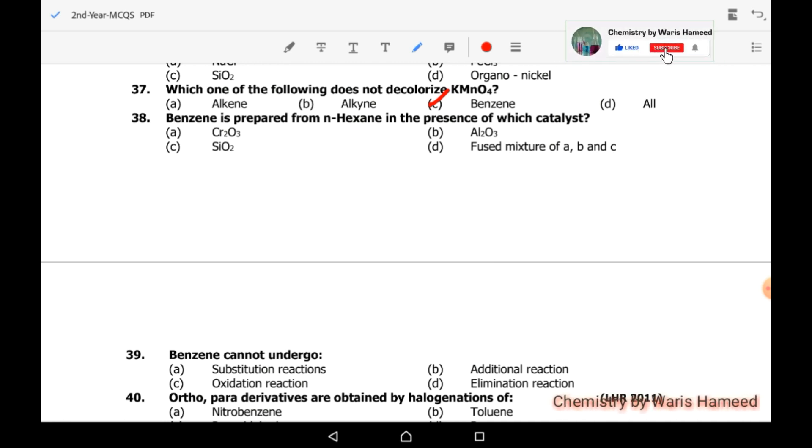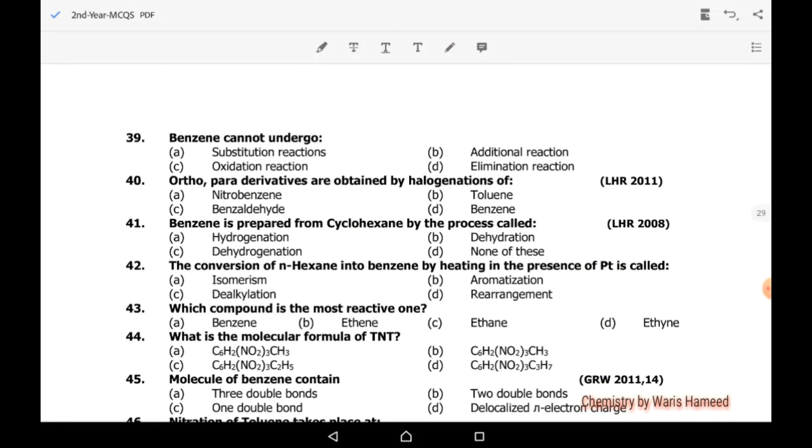Benzene is prepared from n-hexane in the presence of which catalyst? Actually, all these three catalysts are used for preparation of benzene from hexane. So we can write its fused mixture of Cr2O3, Al2O3, and silica. D option is correct. Benzene cannot undergo elimination reaction. Substitution reactions are easier, addition reactions are tough conditions. Oxidation reactions also can be possible, and elimination reactions are actually impossible for benzene.